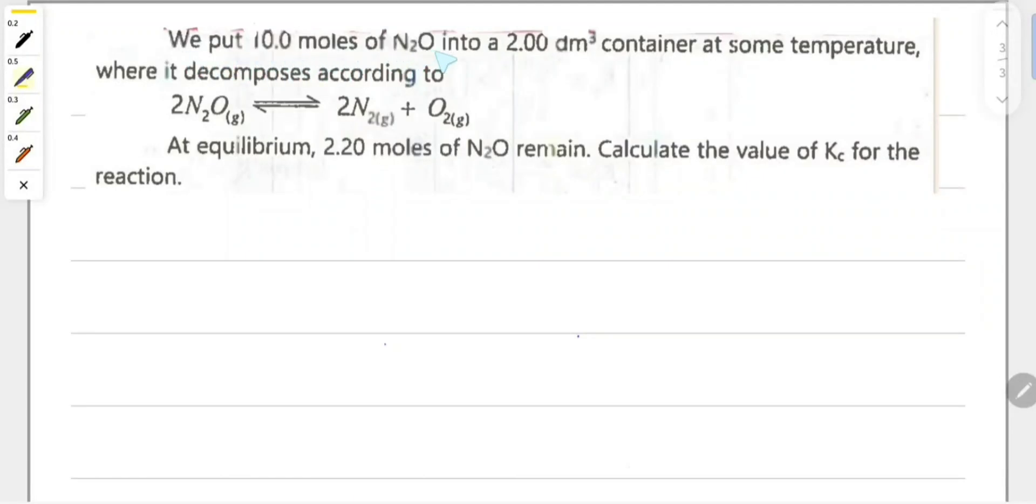We put 10 moles of dinitrogen oxide into a 2 cubic decimeter container at some temperature where it decomposes according to the equilibrium equation given. At equilibrium, 2.2 moles of dinitrogen oxide remain. Calculate the value of Kc for the reaction.